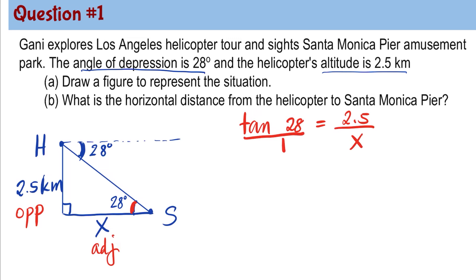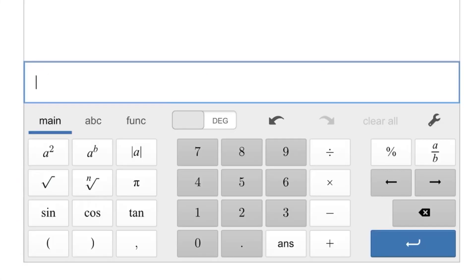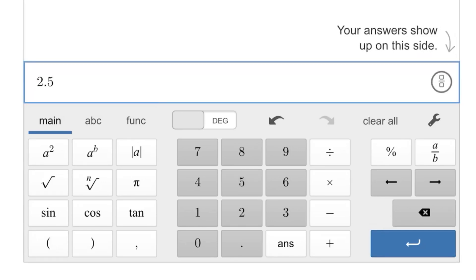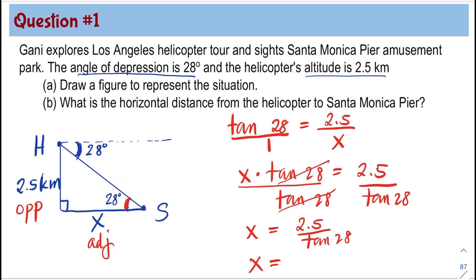We can write down over 1 and then cross multiply. So this gives us X times tangent 28 is equal to 2.5. Solving for X, we divide both sides by tangent 28 degrees, so tangent 28 divided by tangent 28 is 1. X is equal to 2.5 divided by tangent 28. Using your calculator, we get the horizontal distance X is 4.70 kilometers.